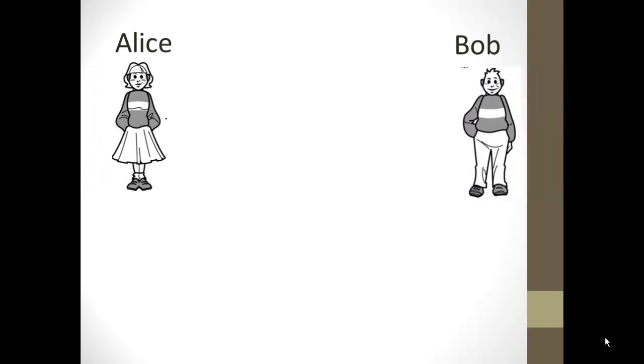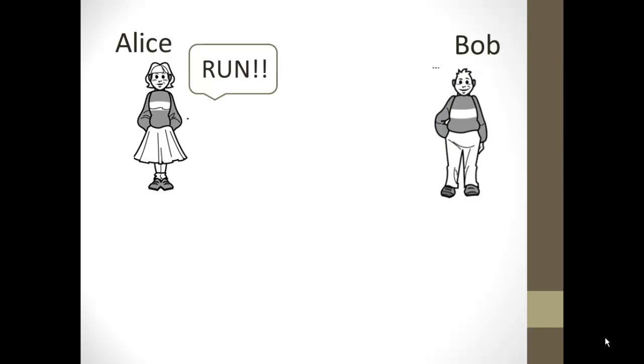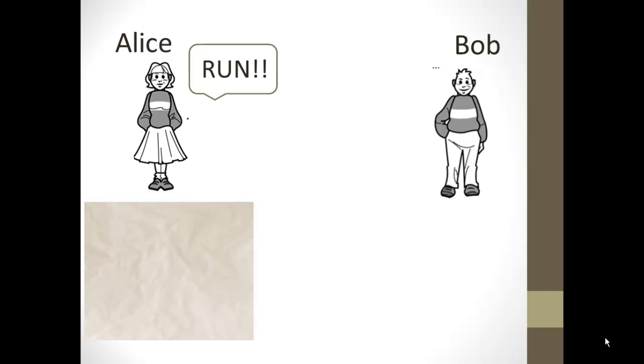In our first video we had Alice and Bob. Alice and Bob are undercover agents and Alice wanted to send a message to Bob. In the last video she sent a message that said 'run.' Now in this video she was wrong — her cover wasn't blown — and she wants to send a message saying that everything is okay. So she takes out a sheet of paper and she writes her message down.